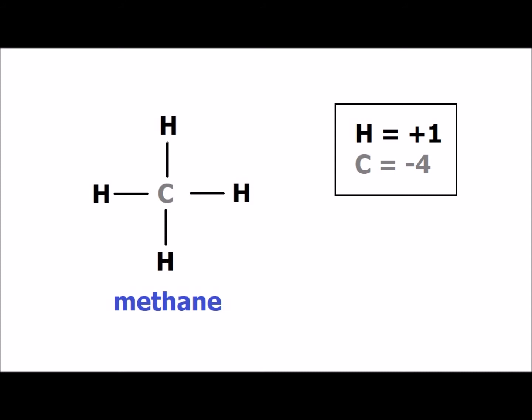Recall that the most common oxidation number for hydrogen is plus 1. We know that the total of oxidation numbers for a compound must equal zero. Since we have four hydrogen atoms in methane, each of which has an oxidation number of plus 1, the oxidation number of carbon must be minus 4 in methane.